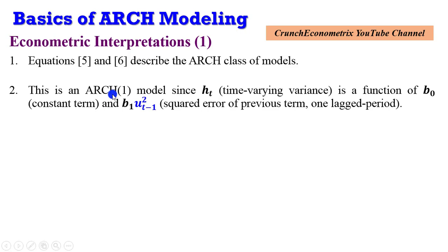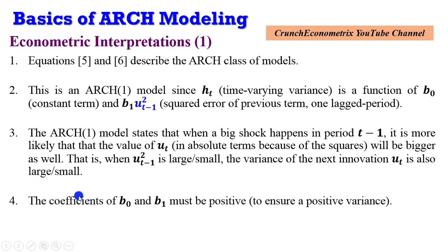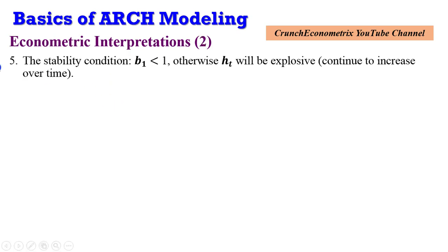The H1 model states that when a big shock happens in the previous period, it is more likely that the value of ut in absolute terms — because of the square — will be bigger. That is, when u-squared t-minus-1 is large or small, the variance of the next innovation in period t is also large or small. The coefficients beta-naught and beta-1 must be positive in order to ensure a positive variance. For the stability condition to hold, beta-1 must be less than 1.